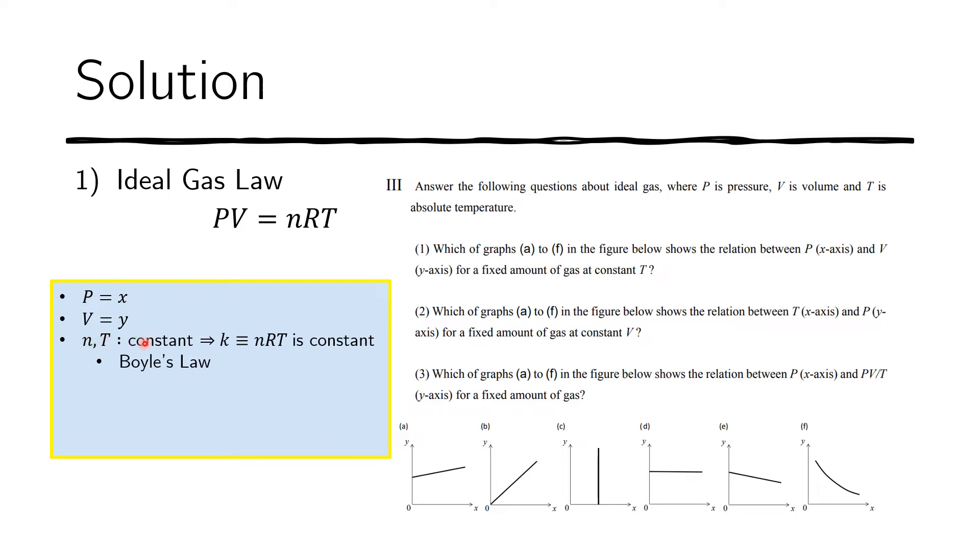So n and T are constant means that nRT, this quantity here is a constant, could be represented by a quantity k. So it's just a constant. And this is actually Boyle's law.